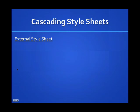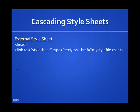In an external style sheet, a separate document that resides on a web server is created using a text editor with the file extension .css. Within the HTML document, an external CSS document is referred to as a style sheet of type text/css and links to the URL of the CSS document. In this example, my-style-file.css is the document that contains the CSS style rules.